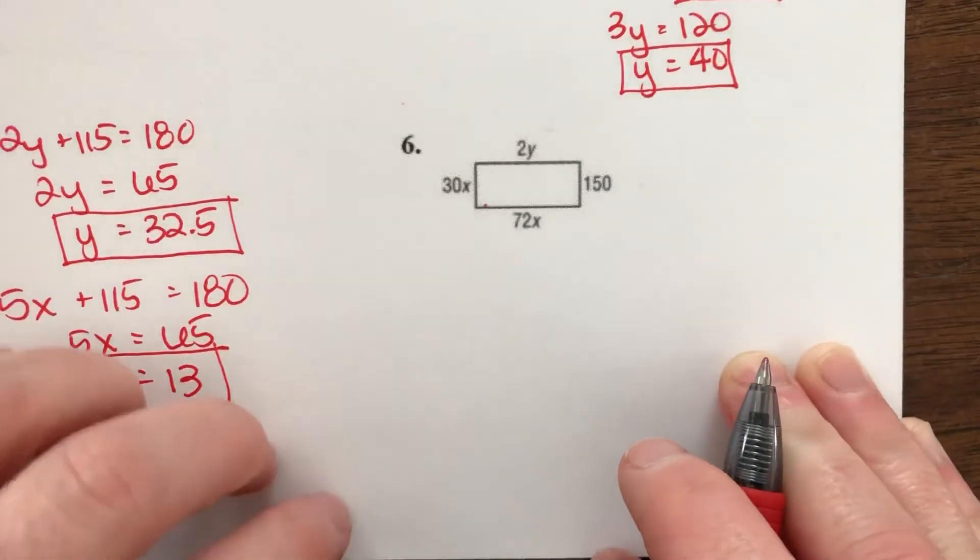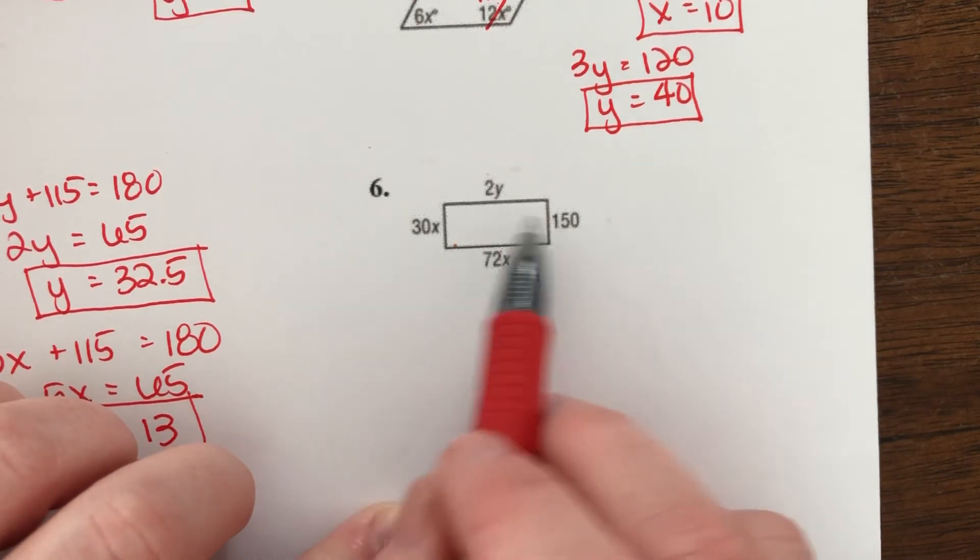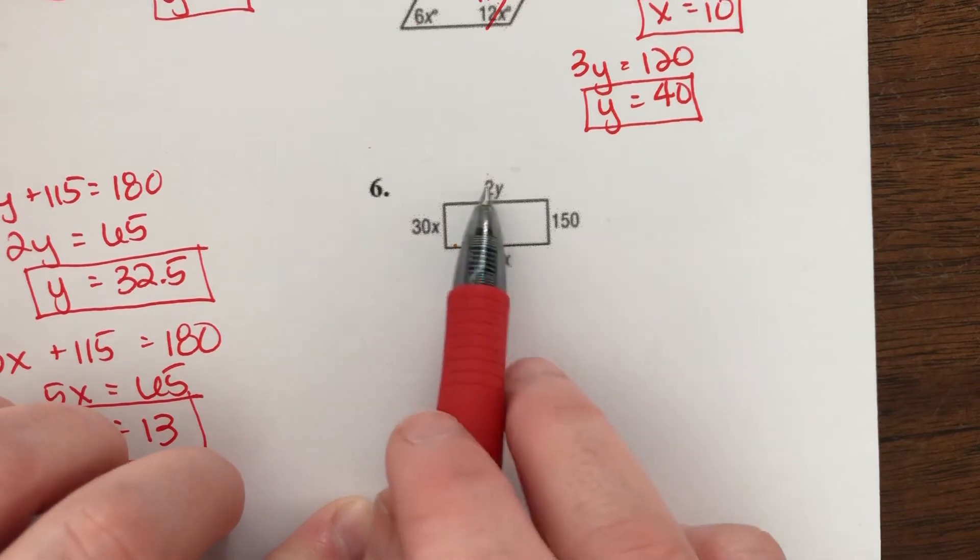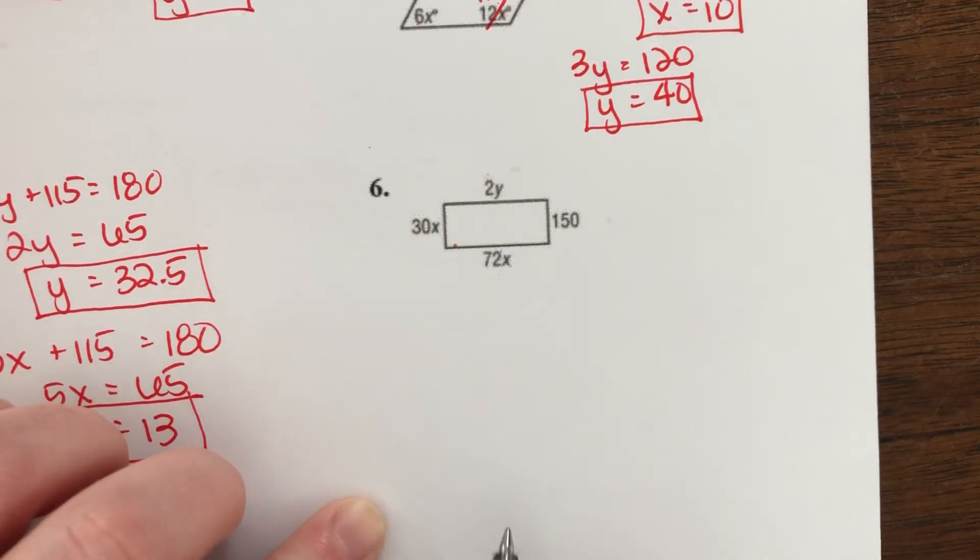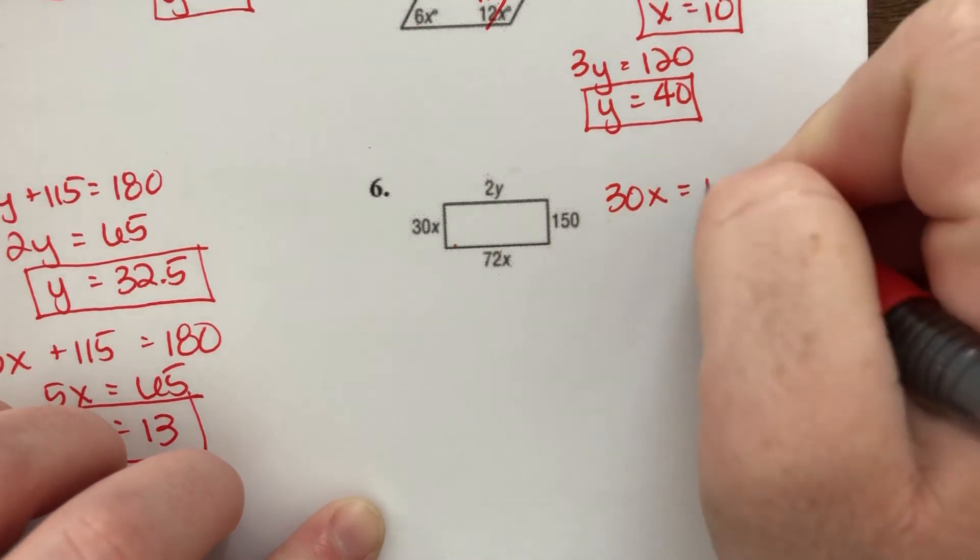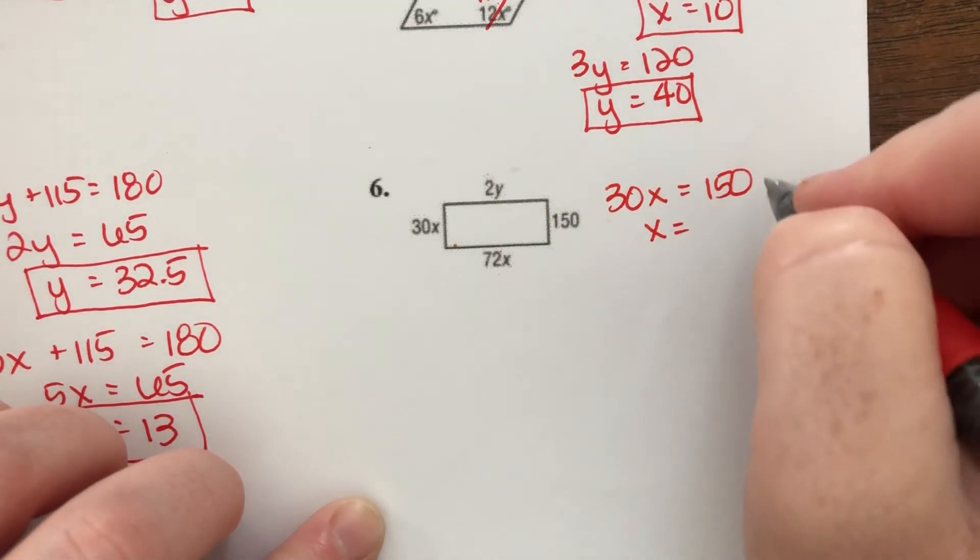And last but not least on this first page, we know sides opposite from each other are congruent. So first, I can't set 2y equal to 72x because I've got to know what one of them is to solve for the other. But I can set 30x equal to 150. Divide by 30, x equals 5.